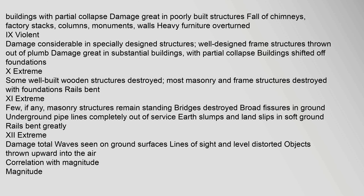IX — Violent: Damage considerable in specially designed structures; well-designed frame structures thrown out of plumb; damage great in substantial buildings with partial collapse; buildings shifted off foundations. X — Extreme: Some well-built wooden structures destroyed; most masonry and frame structures destroyed with foundations; rails bent. XI — Extreme: Few, if any, masonry structures remain standing; bridges destroyed; broad fissures in ground; underground pipelines completely out of service; earth slumps and land slips in soft ground; rails bent greatly. XII — Extreme: Total damage. Waves seen on ground surfaces; lines of sight and level distorted; objects thrown upward into the air.